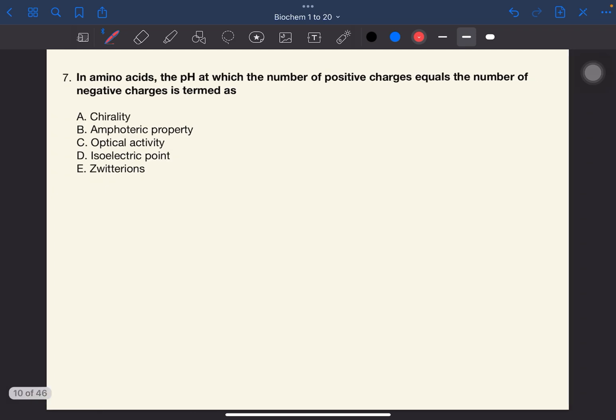Number seven. In amino acids, the pH at which the number of positive charges equals the number of negative charges is termed as the answer to this one, as I've said earlier, is the isoelectric point or Pi. Pi is the pH at which the amino acid exists in its zwitterionic form. And take note that each amino acid has a different isoelectric point. Wag kayong makonfuse, the zwitterion is the molecule while the isoelectric point naman is a numerical value, pH number to be exact.